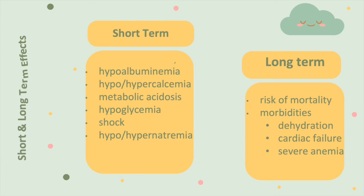Short-term effects: mineral and electrolyte imbalances from not having proper vitamins result in hypoalbuminemia, hypo- or hypercalcemia, metabolic acidosis, hypoglycemia. These children can be in shock, and hypo- and hypernatremia may also occur — all representing imbalances of vitamins and minerals.